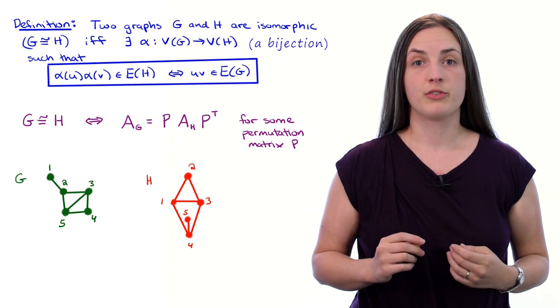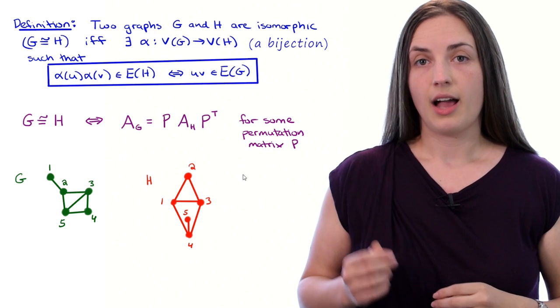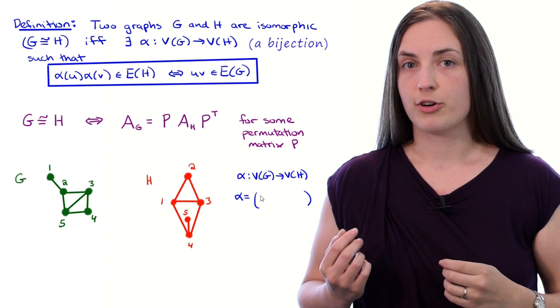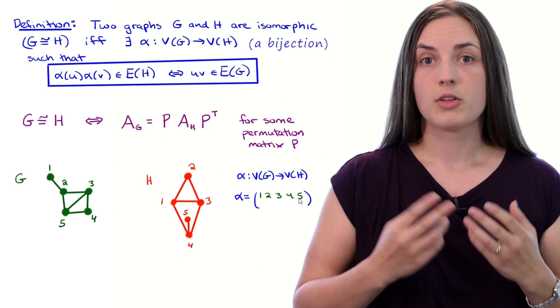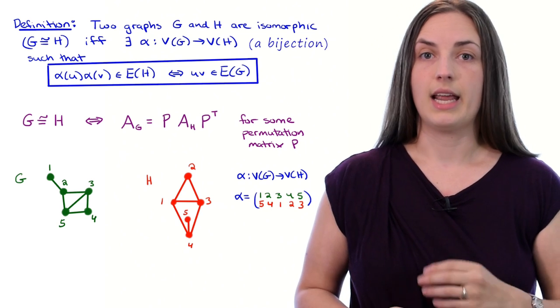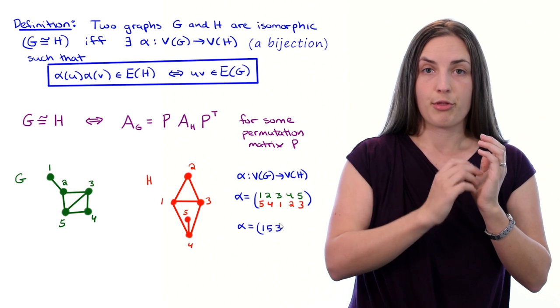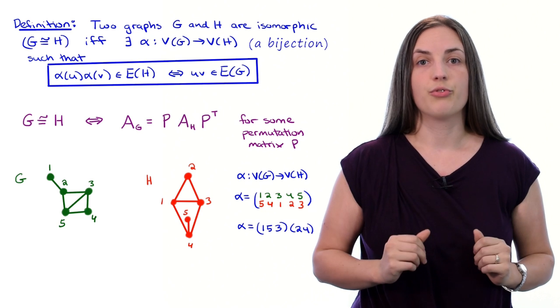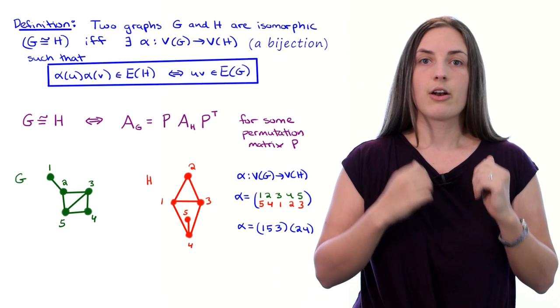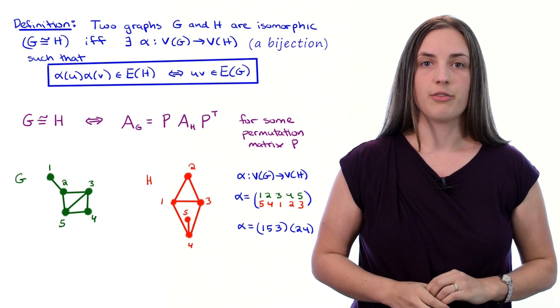If we wanted to find an isomorphism between these two graphs, let's consider what bijection we might use. We'll take α to map from V(g) to V(h), and we'll say that α can map vertices 1, 2, 3, 4, 5 of g to vertices 5, 4, 1, 2, 3 respectively in h. A different notation for this is α equals (1 5 3)(2 4). This tells us that 1 goes to 5, 5 goes to 3, and then 3 goes back to 1, and also tells us that 2 goes to 4, and 4 goes back to 2. That's known as cycle notation for this bijection α.